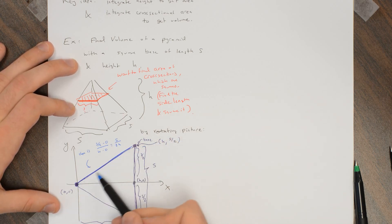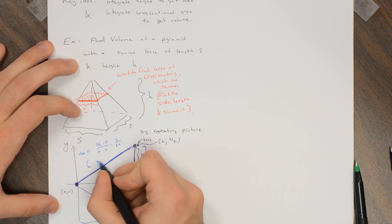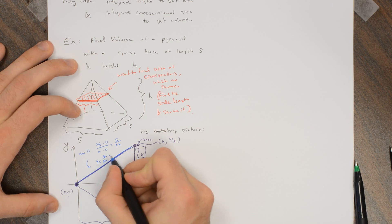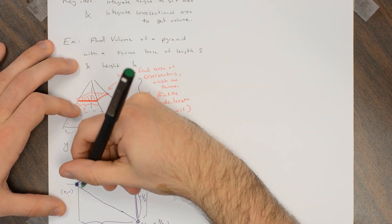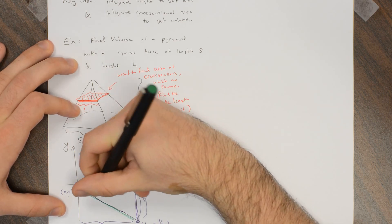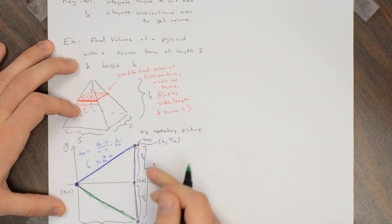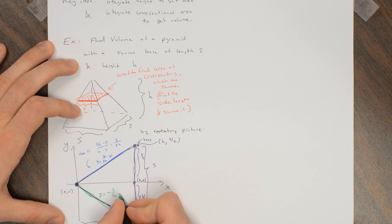So this line has slope s over 2h, and it goes through the origin, so this is the line y equals s over 2h times x. And similarly, this line down here, either using the same argument or using symmetry, because we just take that side and reflect it across the x-axis, this is the line y equals minus s over 2h times x.